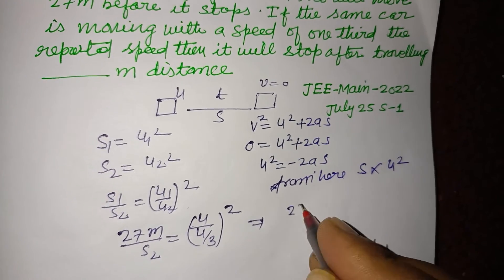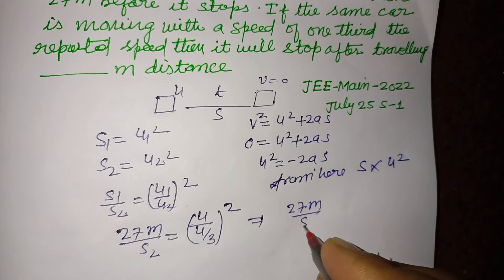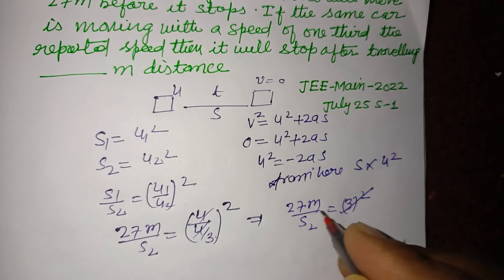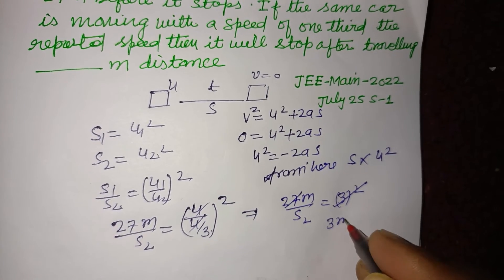Okay, so 27 meters upon s2 equal to, you cancel u, this is 3 square which is 9. 27 upon 9 is 3, so s2 equals 3 meters.